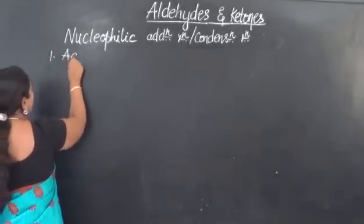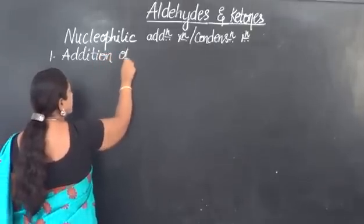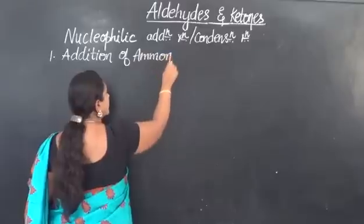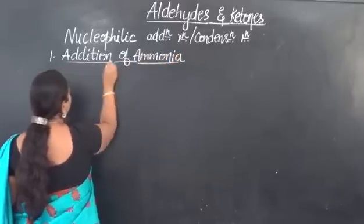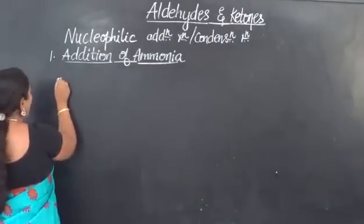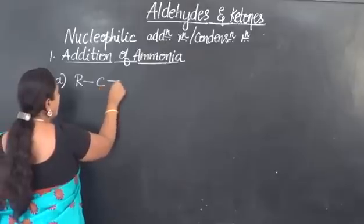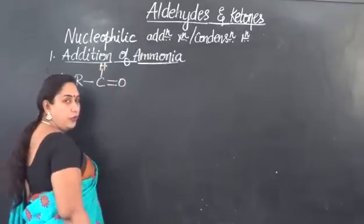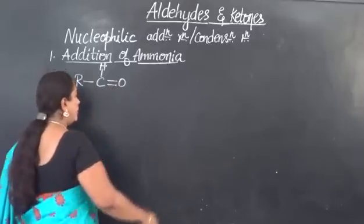Addition of ammonia. Addition of ammonia will occur in a similar manner for both aldehydes and ketones. So, let us see how actually this takes place. General formula of aldehydes, as you know, is RCHO, where carbon and oxygen are linked by means of double covalent bond.